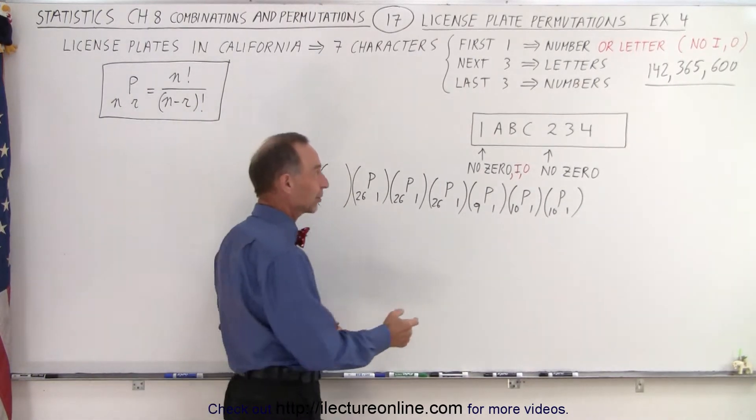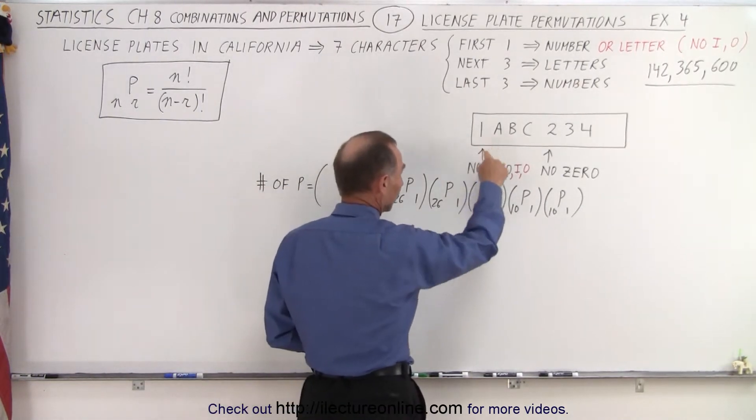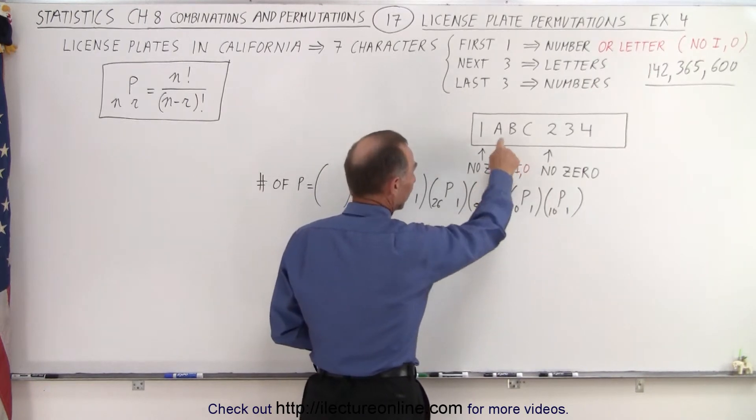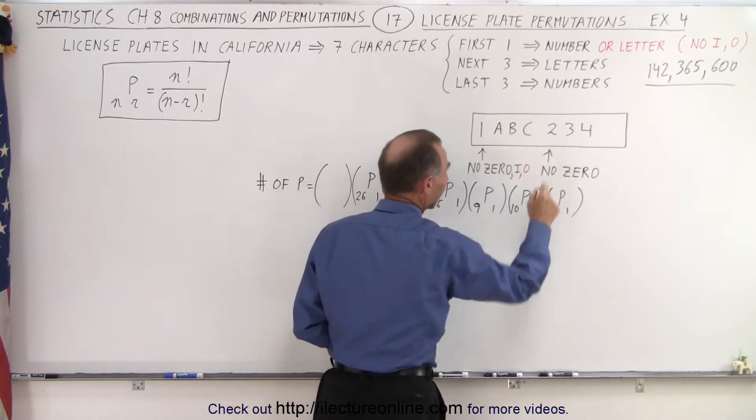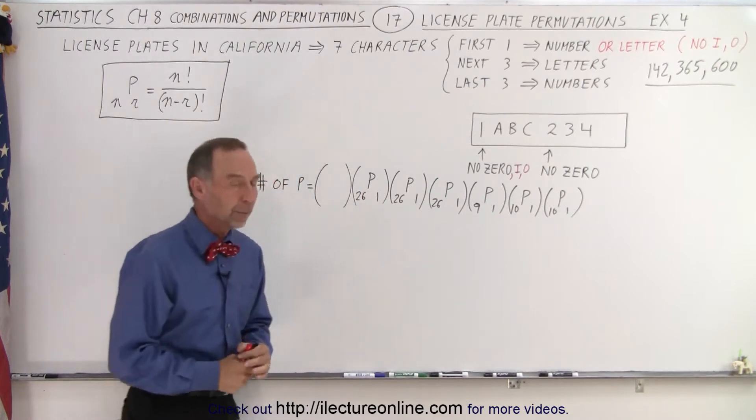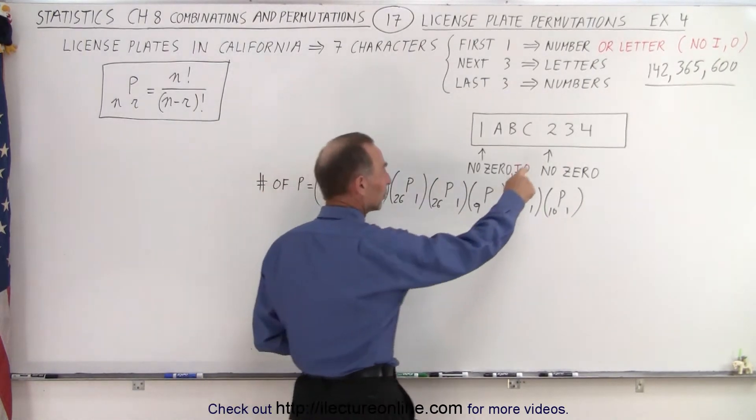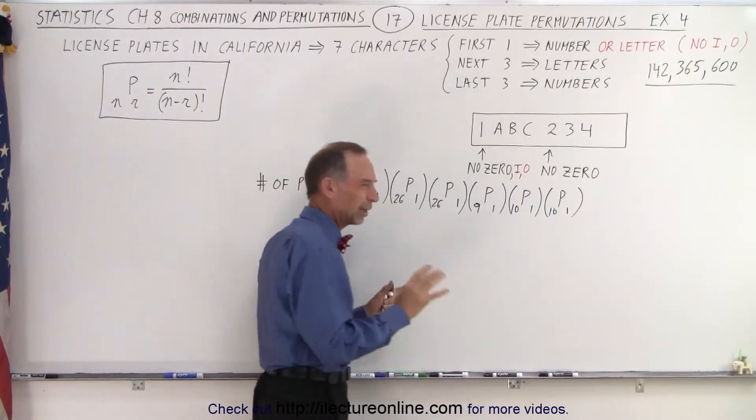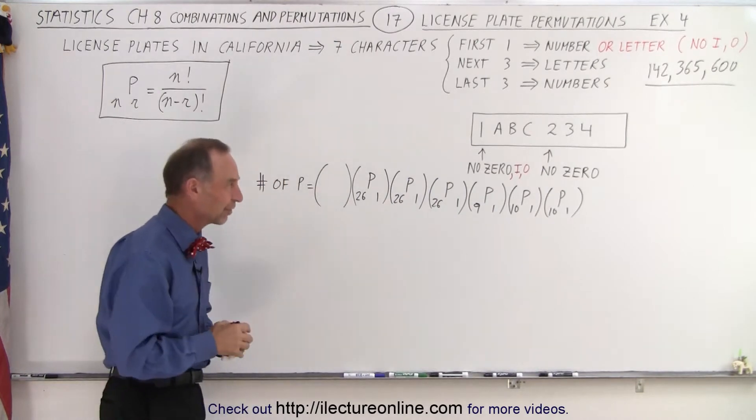Because we had seven characters, the first character had to be a number, but not a zero was allowed. The next three were letters, and then the last three were numbers again. And again, the first one was not allowed to be a zero, so we wouldn't confuse it as an O, for example.